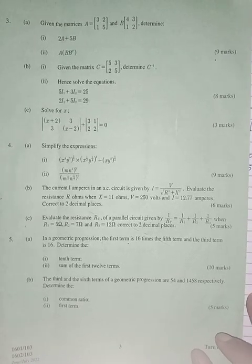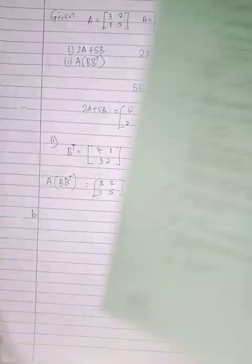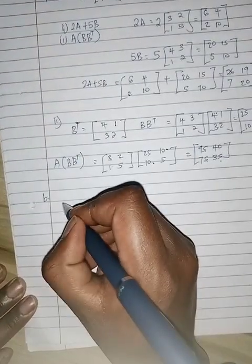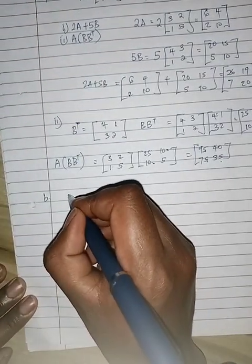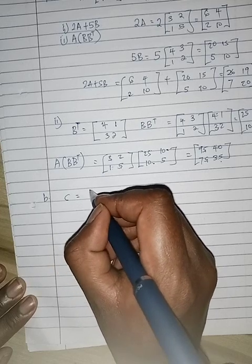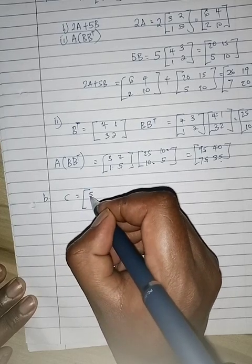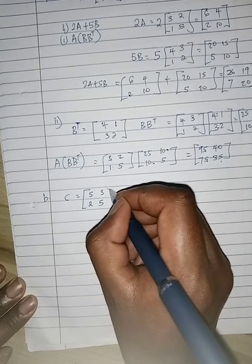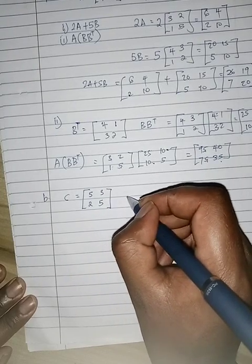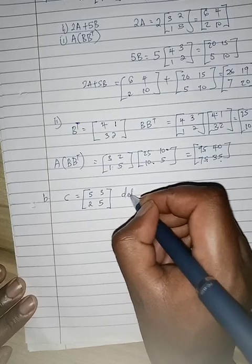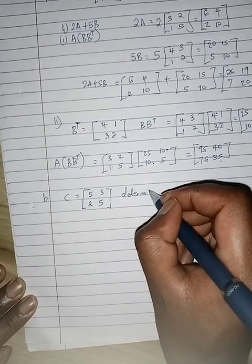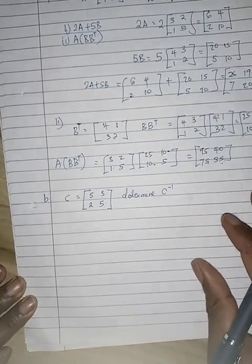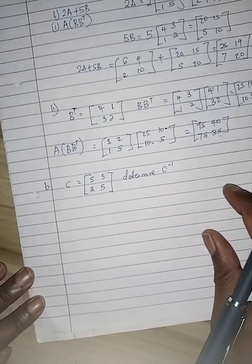So without further wasting time, I'll go straight to the question. If you're given that C is 5, 2, 3, 5, determine the inverse of C.